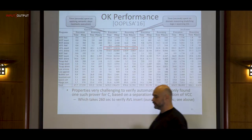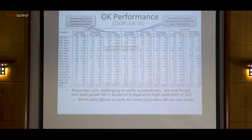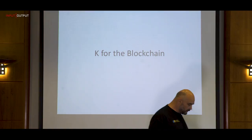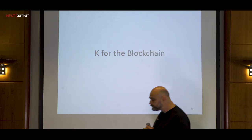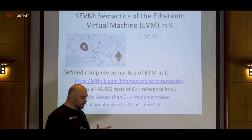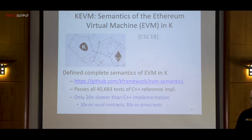Now let me tell you how we use all this K infrastructure for the blockchain. The very first step to approach smart contracts formally is to have a formal semantics of the basic virtual machine that runs smart contracts — the Ethereum Virtual Machine — and for that we have defined the EVM semantics in K.